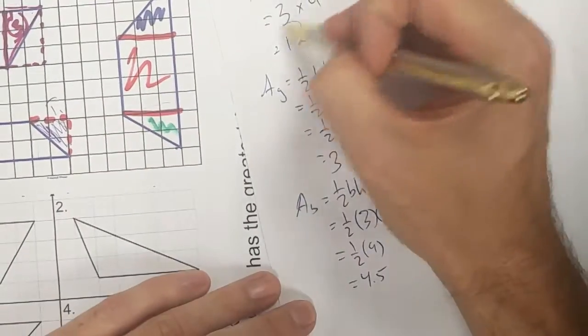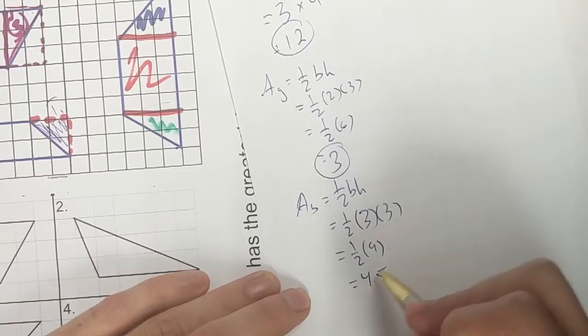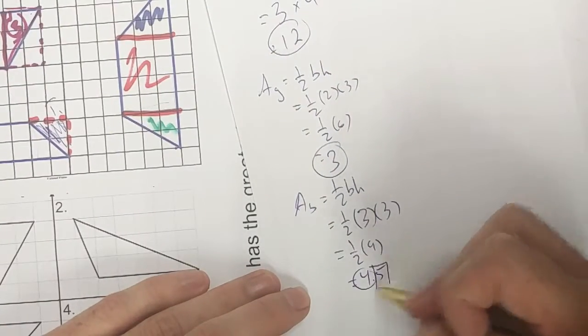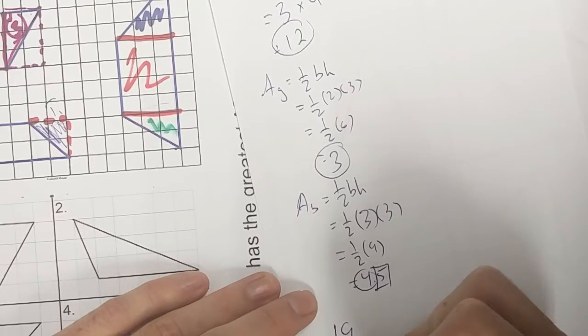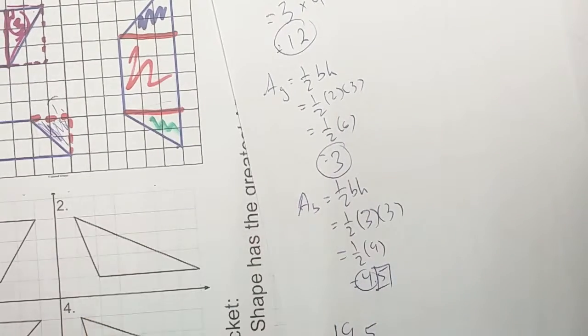If I add all these up together, I have 12 plus three, that's 15 plus four, which is 19 and half, a total of 19.5.